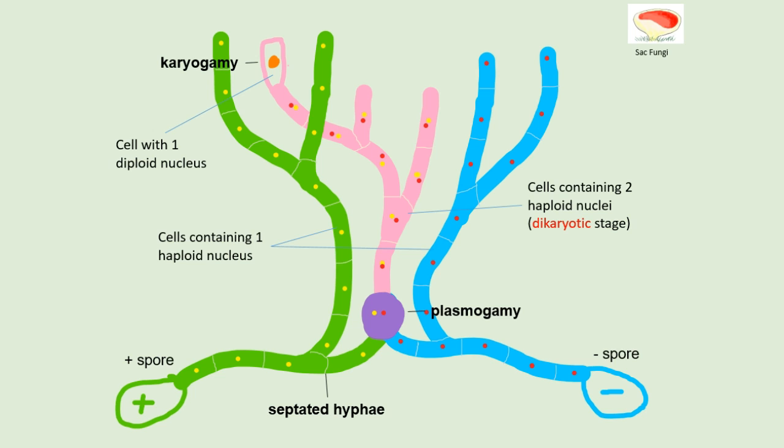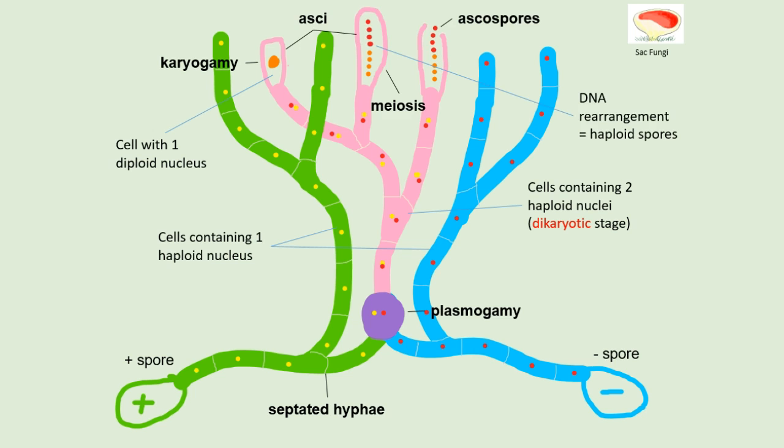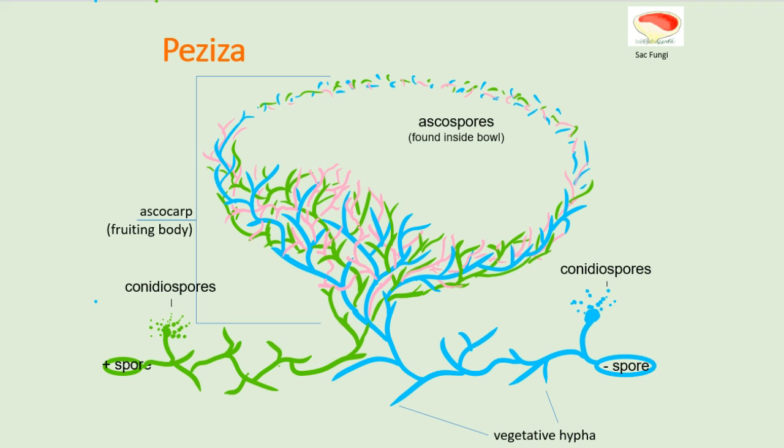Soon after, the diploid cell will undergo meiosis and form eight single haploid-nucleated sexual spores called ascospores within an ascus. Asci is plural for ascus, as shown in this slide. As the asci mature, the sac will rupture and the ascospores will be released into the air where they can then begin another life cycle.